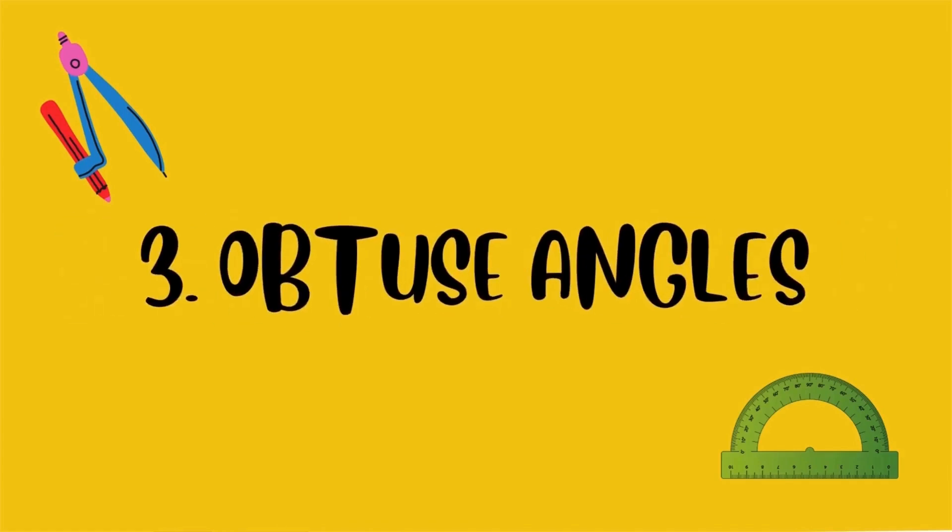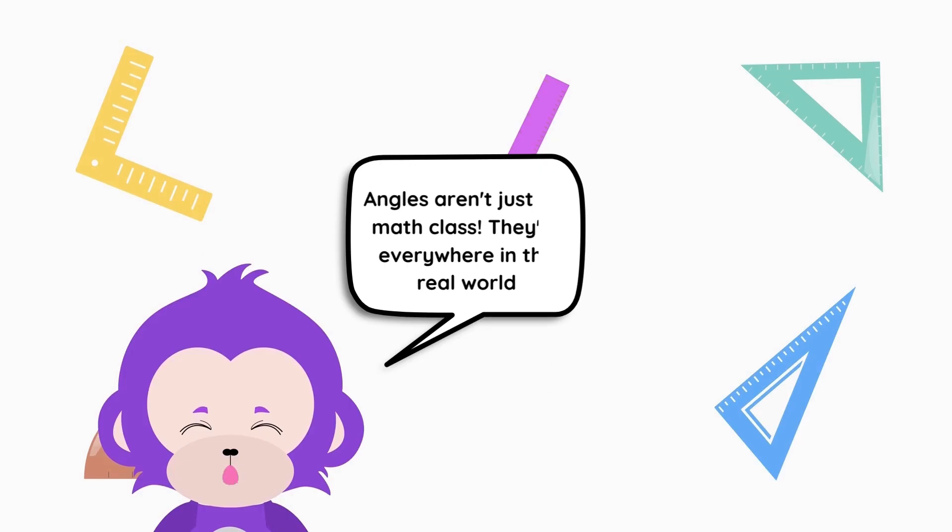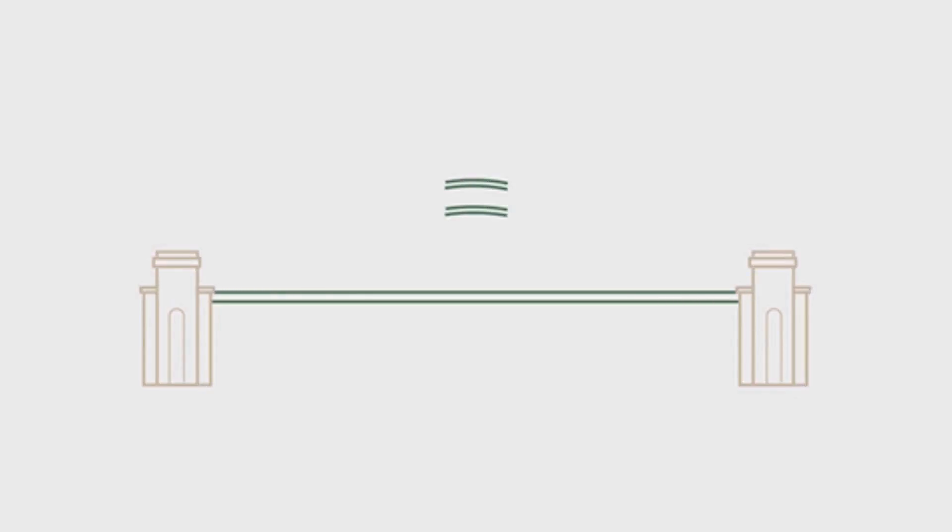Three: obtuse angles. These big boys are open wide, measuring more than 90 degrees. Think of a laptop wide open, that's an obtuse angle. Angles aren't just for math class, they're everywhere in the real world, helping us build bridges.